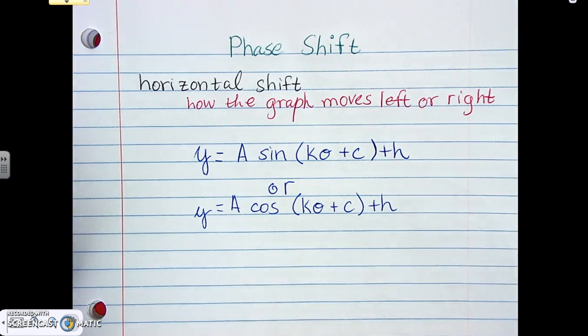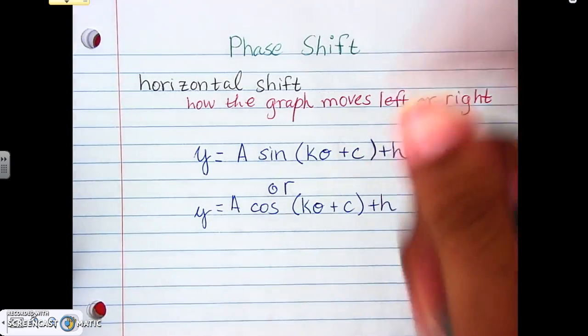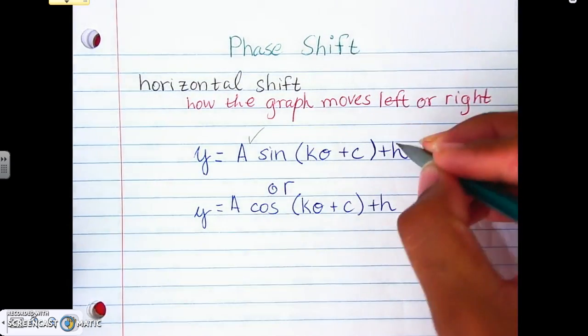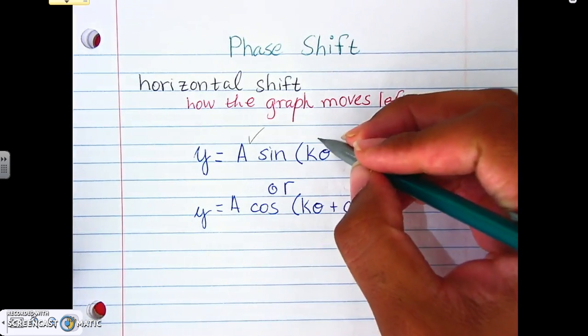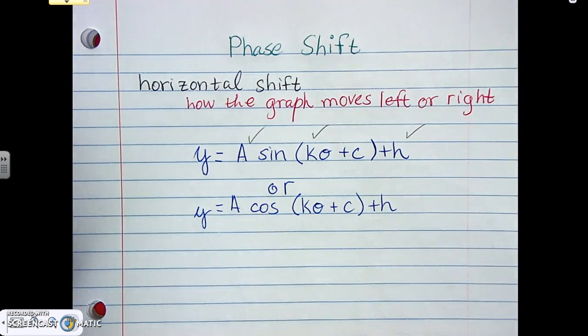Now with this, we're going to pull up the same formula again, or the same way we've been writing it. So we've already talked about the A, which is amplitude. We've already talked about H, which is the vertical shift. And we've talked about K already. Now, when it comes to this part, the only thing that's left is C.